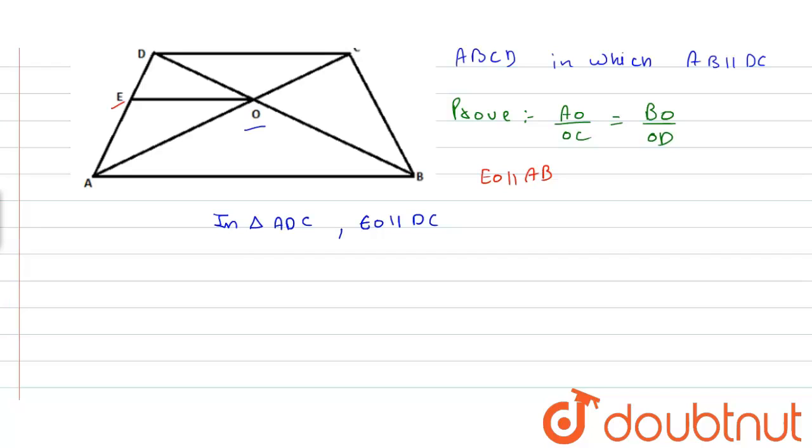So by basic proportionality theorem, AE upon ED is equal to AO upon OC. This is our equation 1.